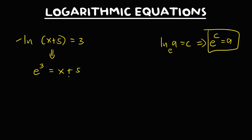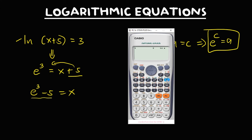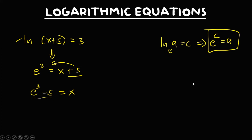To solve for x, transpose the positive 5. So we have e to the power 3 minus 5 equals x. Computing e to the power 3 minus 5 gives 15.0855. So x is equal to 15.0855.